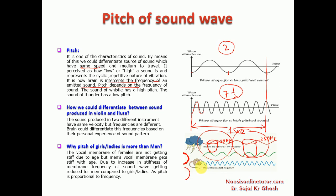Since girls and ladies have a membrane that does not become steep, they create sound waves of high frequencies, so their pitch is higher compared to men. Consider a picture of thunder and a mouse both creating sounds passing through air. Both have the same velocity, but the thunder has around 5 Hertz frequency while the mouse has around 14 Hertz frequency. So the frequency of the sound produced by the mouse is more, and that is why the brain can differentiate between the sound of lightning and the sound of the mouse due to the higher pitch of the sound produced by the mouse.